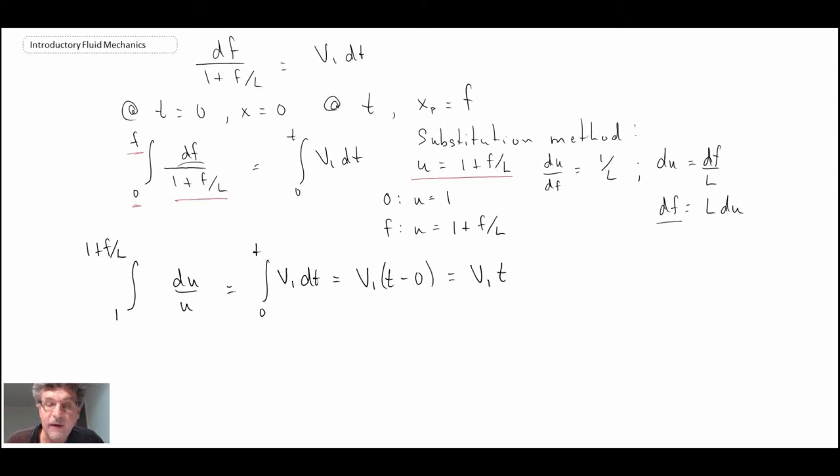The left-hand side, du over u, if you look back at your integral tables, you'll recognize that that is a natural logarithm. And did I forget something here? Just a moment. We have du by df. Du is df by dl. Df is ldu. So df, I forgot the l here. I apologize for that. There should be an l. And the l could be pulled out because that's a constant.